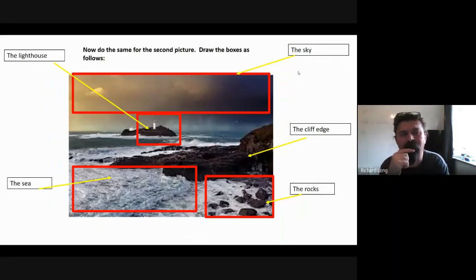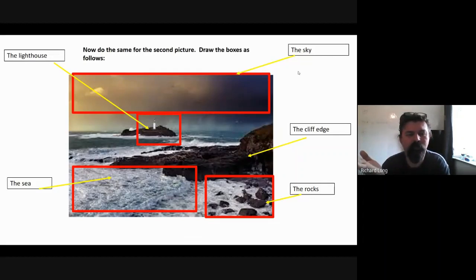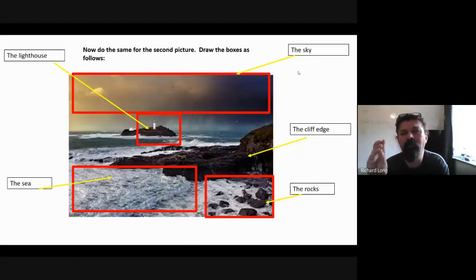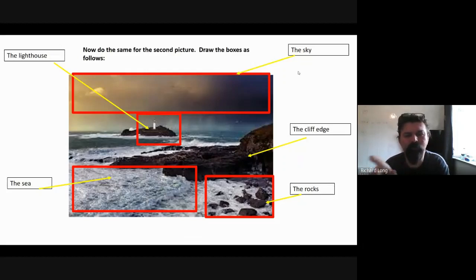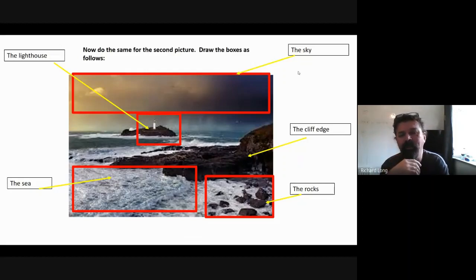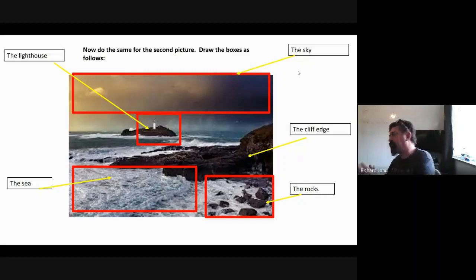So we're going to cover sky, cliff edge, lighthouse, sea, and rocks. For the second picture it's going to be exactly the same — it's the same picture, just different interpretations because of the weather. You're either going to want those subheadings — sky, lighthouse, cliff edge, rocks, sea — or draw a box or circle around each feature. If your drawing isn't good, like mine wouldn't be, you can just write the subheadings.